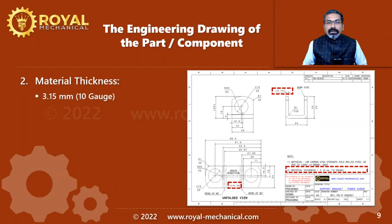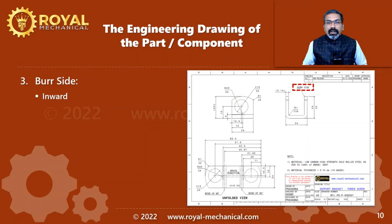The thickness of the power screw support bracket of a car scissor jack is 3.15 millimetres. As you can see on the engineering drawing, the burr is towards the inside of the component. We need to make sure that the burr is towards the inside of the component during the bending operation.